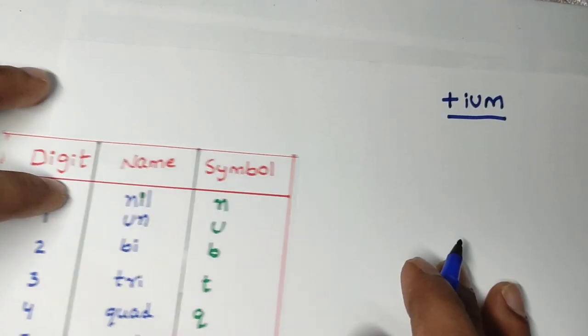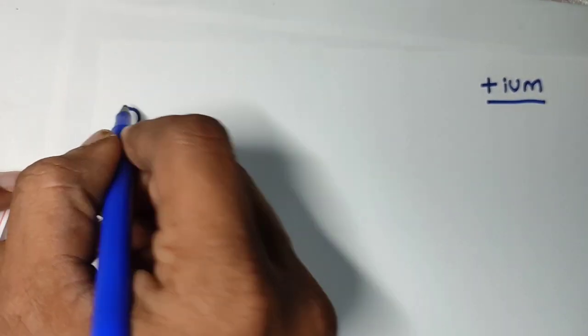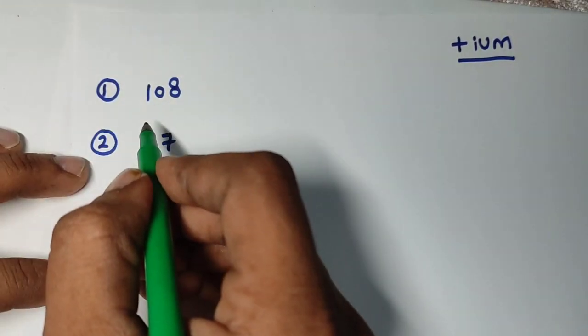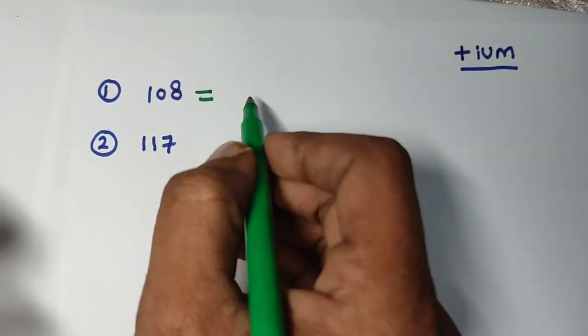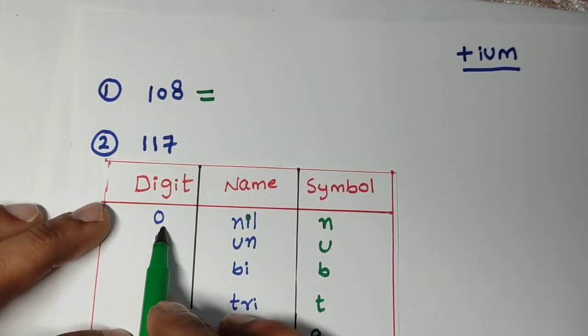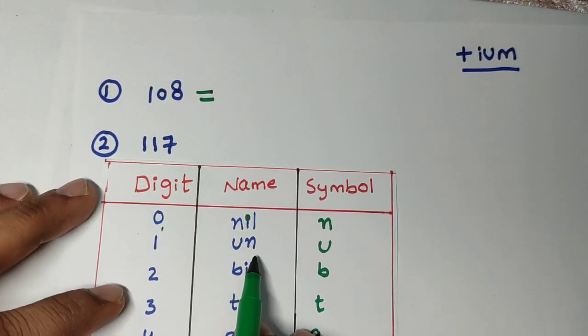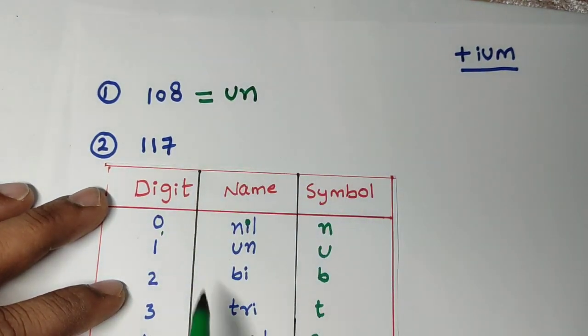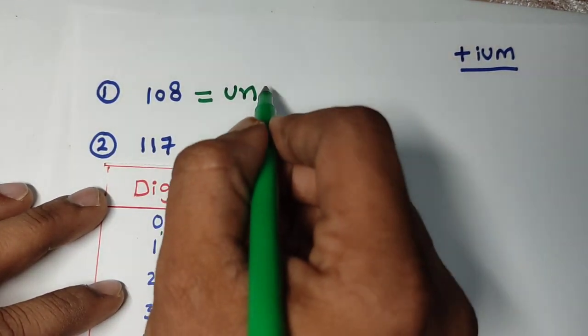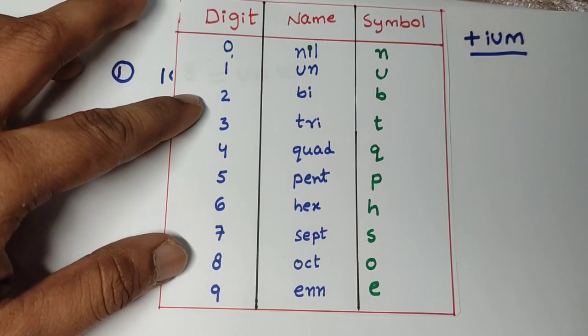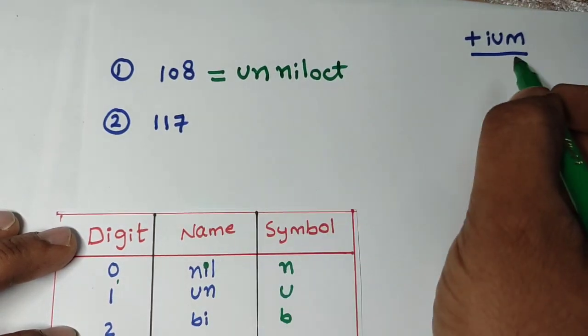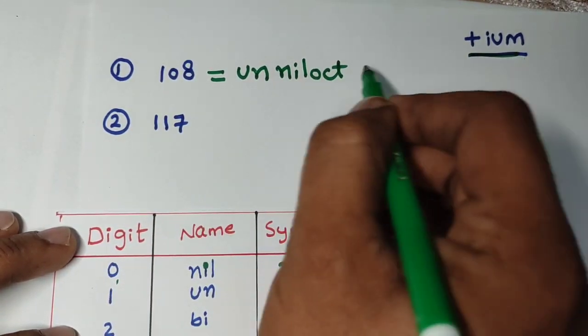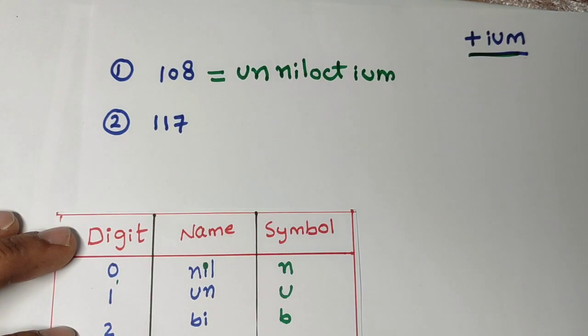Now I will solve some questions. Look at this example. For example, 108 is there. For this, how do you write? For 1 we have to write un. For 0 we have to write nil. And for 8 we have to write oct. And what I told you have to add? IUM. You have to add IUM.